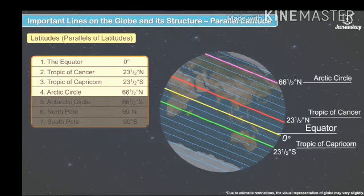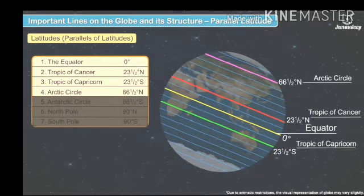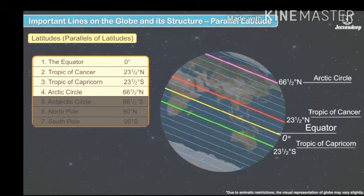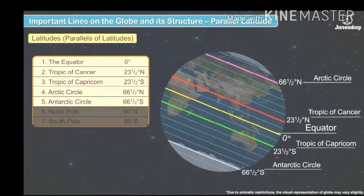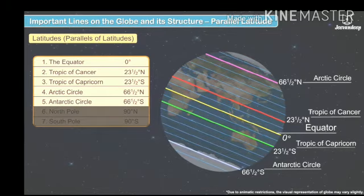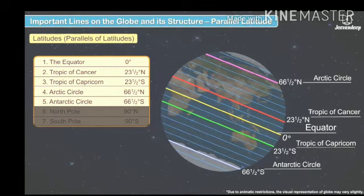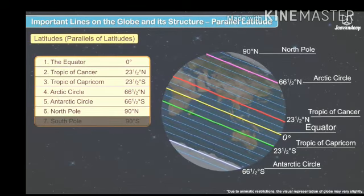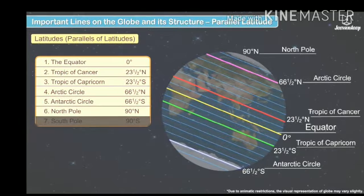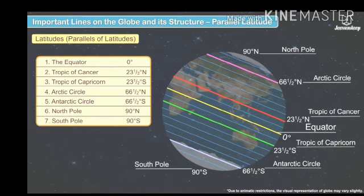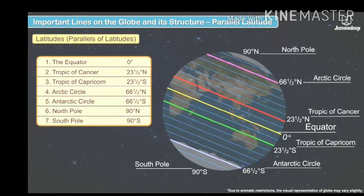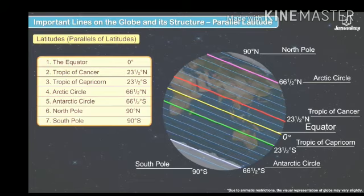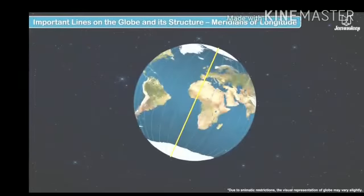Next is the Arctic Circle at 66½ degrees North, and the Antarctic Circle at 66½ degrees South. Then the North Pole at 90 degrees North, and the South Pole at 90 degrees South. These are the important latitudes.